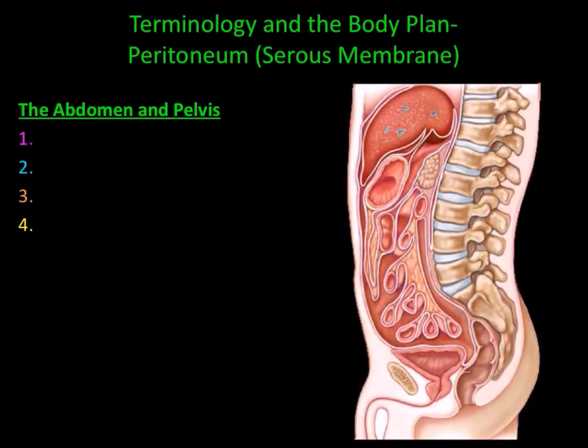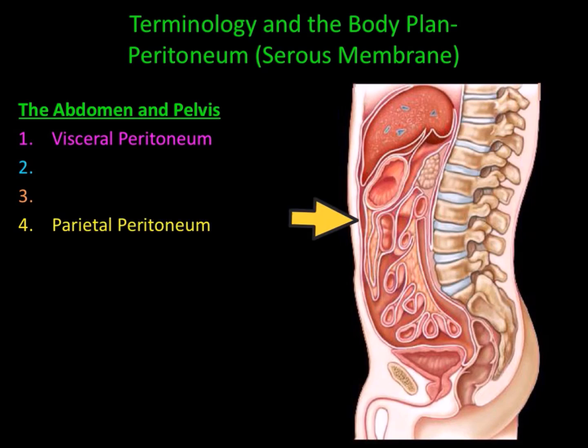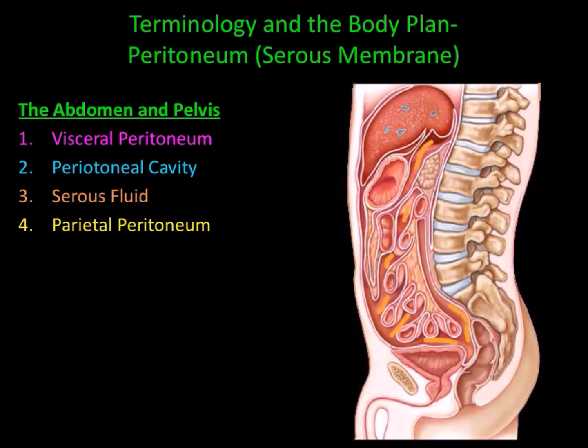The serous membrane surrounding abdominal pelvic organs is called the peritoneum, and it has four parts. The visceral peritoneum attaches directly to the abdominal pelvic organs. The parietal peritoneum is the outermost membrane. In between them is the peritoneal cavity, and within the peritoneal cavity you have serous fluid or peritoneal fluid.